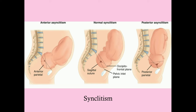Synclitism is the relationship between the pelvic inlet and the bitemporal (occipital-frontal) plane — basically the axis of the baby's head from temple to temple. We want that axis to be parallel to the pelvic inlet. If it's not parallel — asynclitism — the baby's head gets wedged in the pelvic inlet, and it won't be able to get out properly. This isn't the highest-yield USMLE topic, but it illustrates that if something goes wrong with positioning, it makes vaginal delivery harder, though not necessarily impossible.